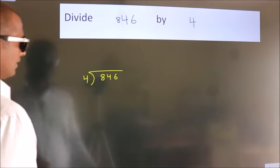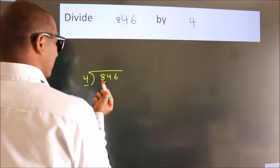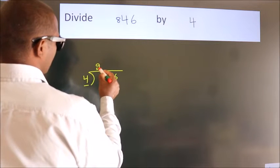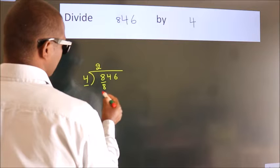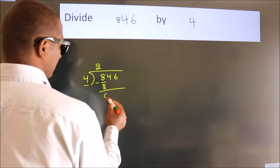Next, here we have 8, here 4. When do we get 8? In 4 table, 4 twos, 8. Now we should subtract, we get 0.